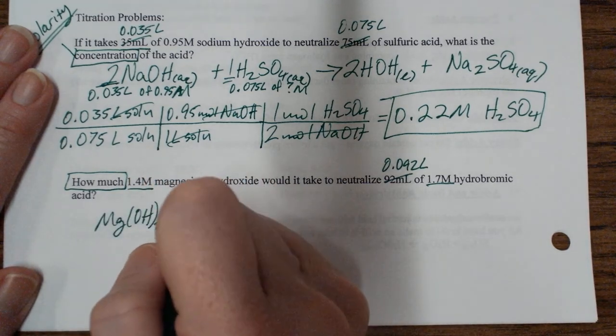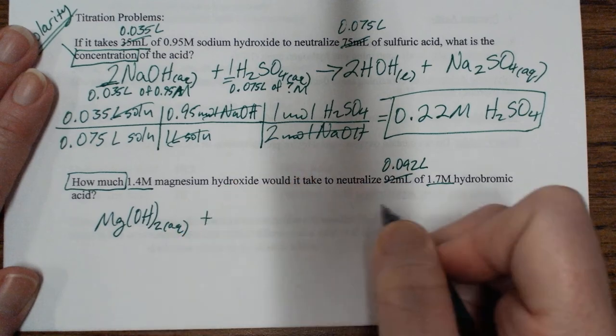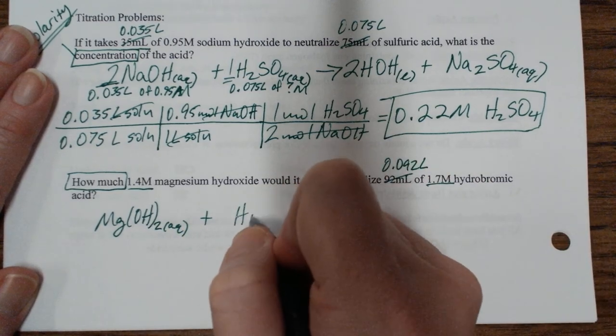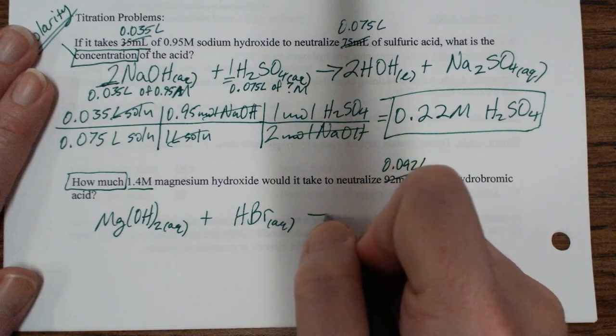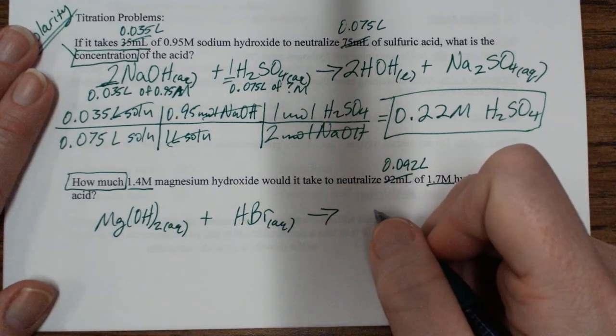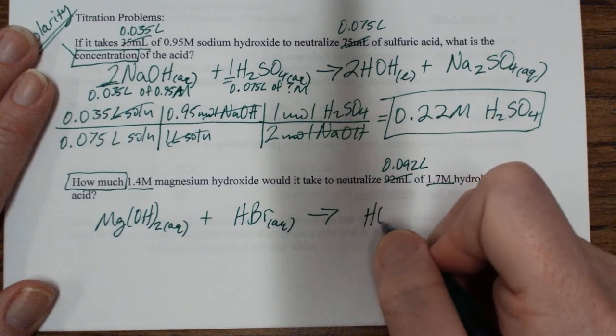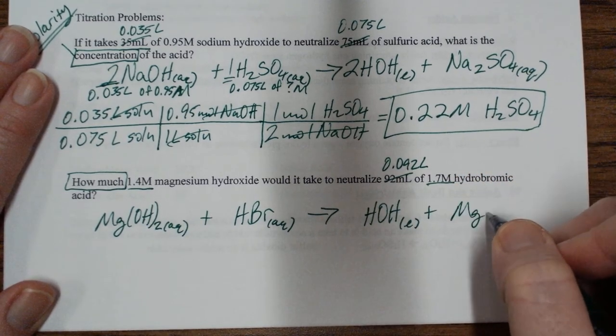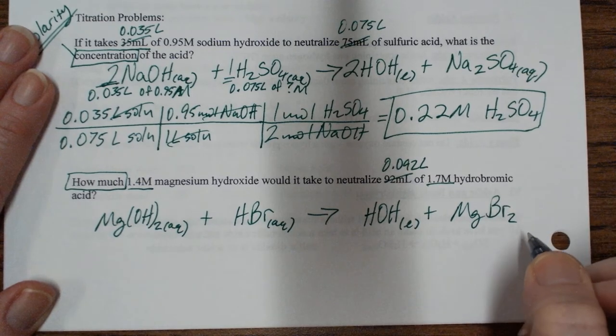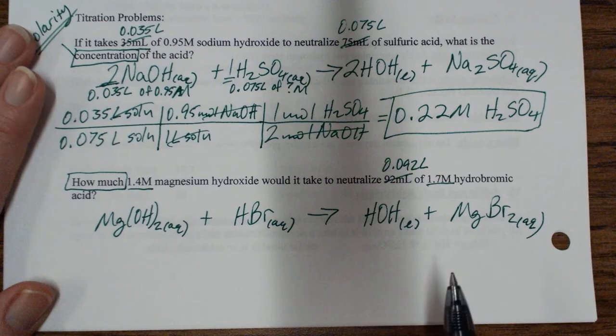I have magnesium hydroxide, and it has a molarity, so it must be aqueous, mixing with hydrobromic acid. And that's aqueous because it's an acid and it's in solution. I get water, so my H and my OH go home together, and that's a pure liquid. And magnesium bromide, and if you look up your solubility rules, this is aqueous.